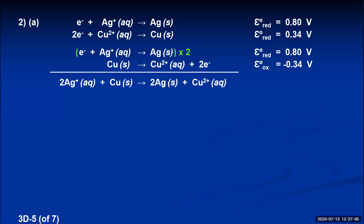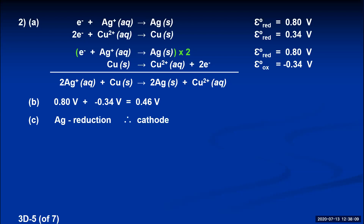Part B asks for the standard voltage: simply add the reduction and oxidation standard potentials together. 0.80 plus negative 0.34 gives a voltage of 0.46. Part C asks for the anode and cathode. The silver reaction is undergoing reduction — silver ion goes to silver — and wherever reduction occurs is the cathode, so silver is the cathode. The copper reaction is reversed to become oxidation, so the copper metal is the anode.